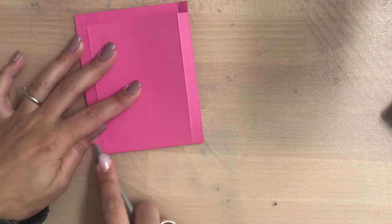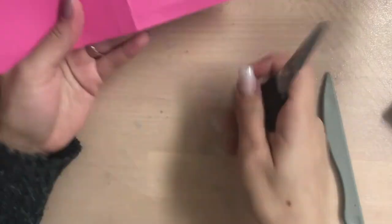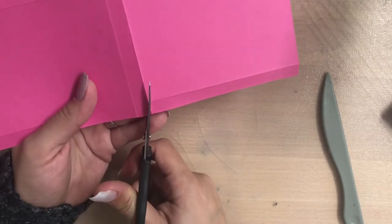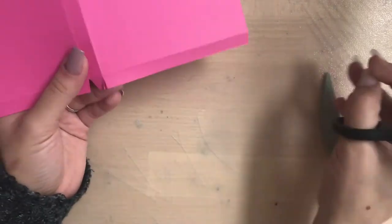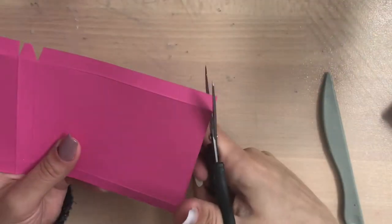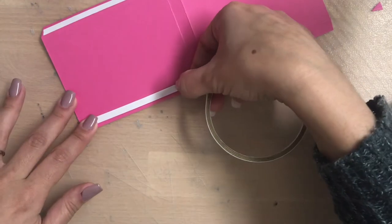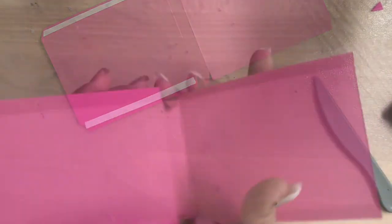Then you cut these little edges out so this box will fold later. I'm cutting one straight and the other one in an angle so it's easier to assemble the box later.